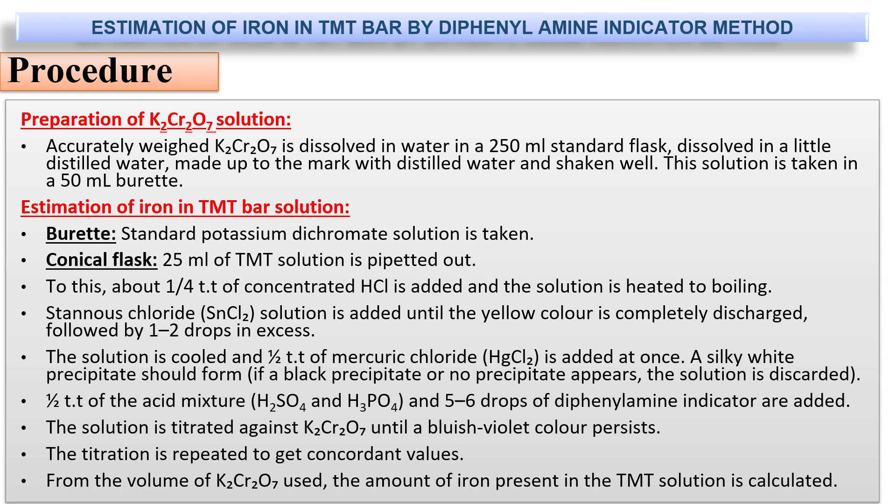Add a test tube of acid mixture and 5 to 6 drops of diphenylamine indicator. The solution is titrated against potassium dichromate until a bluish-violet color persists. The titration is repeated to get concordant values, and from the volume of potassium dichromate used, the amount of iron present in the TMT solution is calculated.